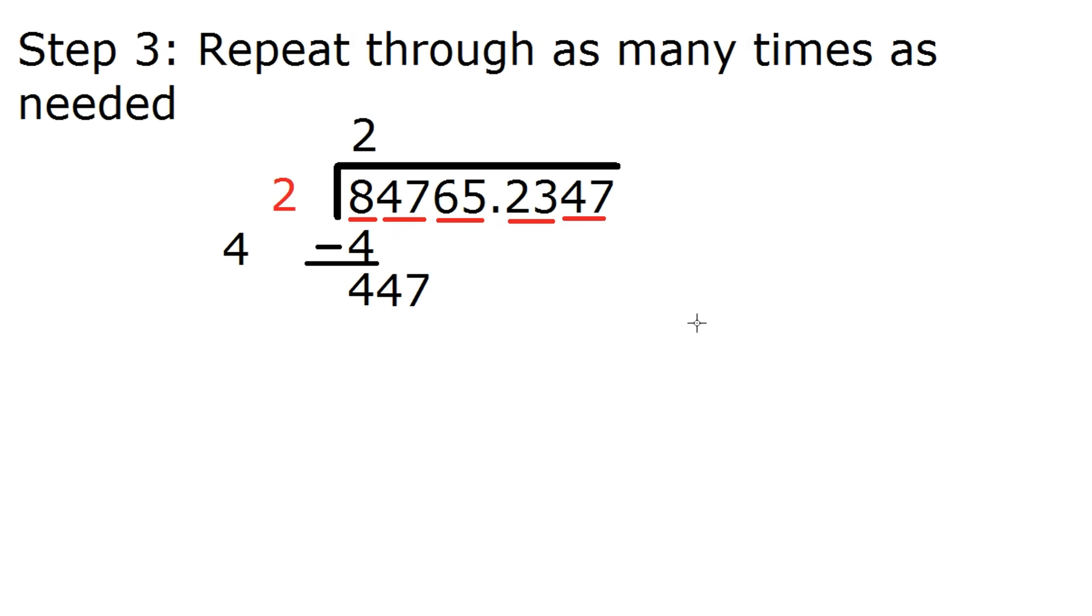So in step 2, you might have wondered why I told you to leave some space here. The reason is because you're going to put a number here. So the first thing you want to do in step 3 is ask yourself, what number can you put here such that this two-digit number multiplied by whatever this number is will be as close to this number without going over? And that sounds kind of complicated and difficult at first, but it's actually pretty simple.